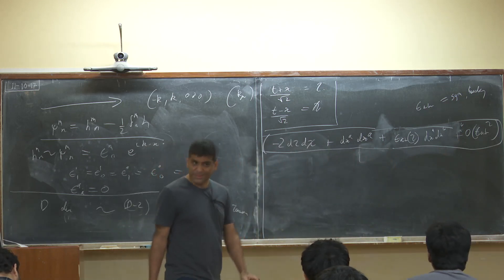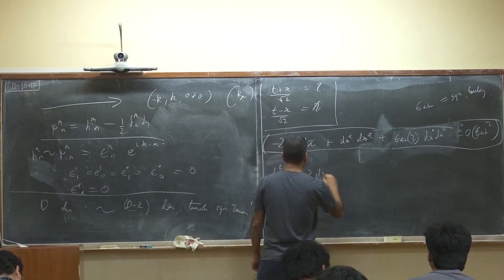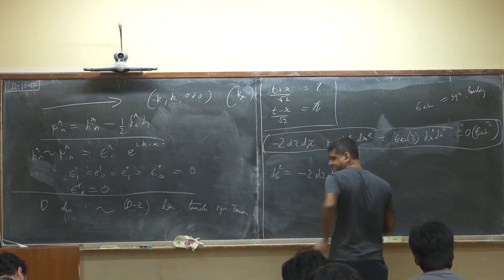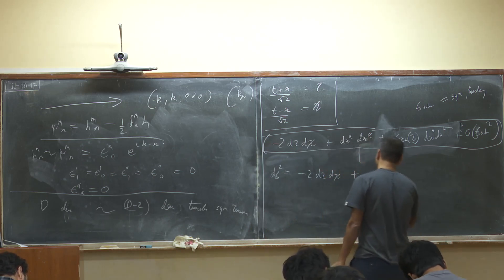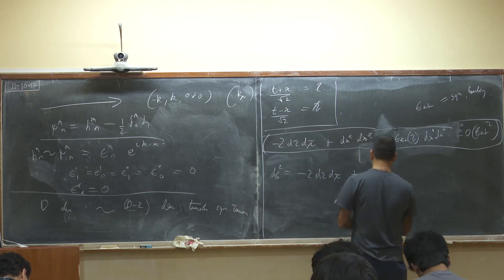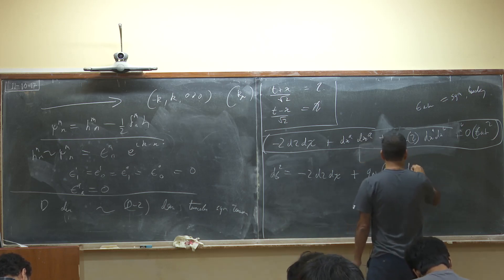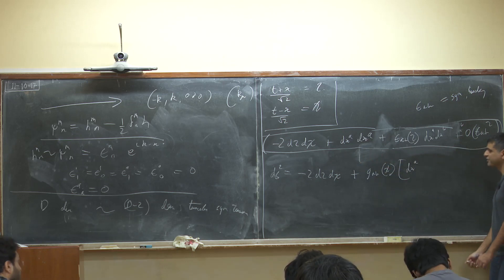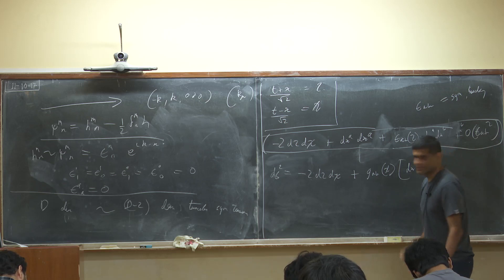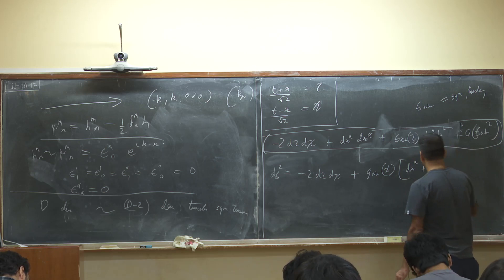Motivated by this, what we're going to do is look for an ansatz which solves Einstein's equations, such that ds² = -2 d_eta d_chi + g_ab(eta) dx^a dx^b, plus possibly a g_a term. Everything in this ansatz is a function of only one variable — that's what gives us all the simplicity.